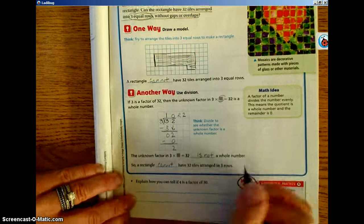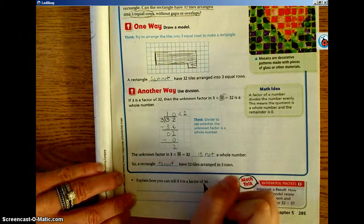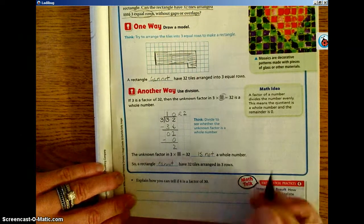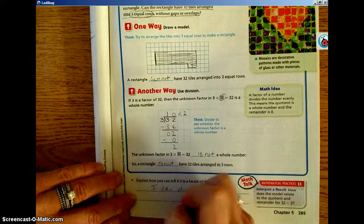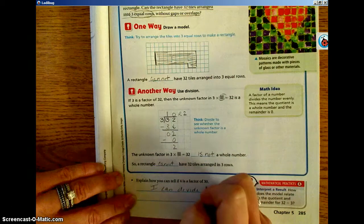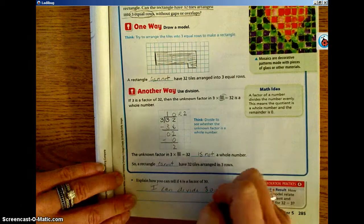Now, explain how you can tell if 4 is a factor of 30. Just like here guys, I can divide 30 by 4.